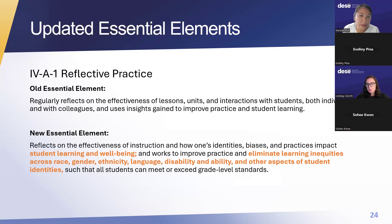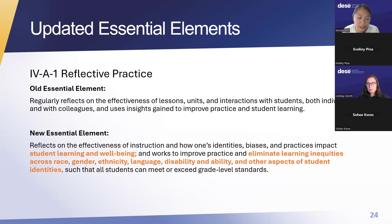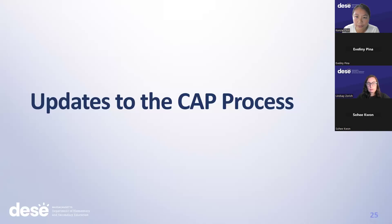The last essential element is reflective practice. The new essential element reads: reflects on the effectiveness of instruction and how one's identities, biases, and practices impact student learning and well-being, and works to improve practice and eliminate learning inequities across race, gender, ethnicity, language, disability and ability, and other aspects of student identities such that all students can meet or exceed grade level standards. Those were the updates to the essential elements.